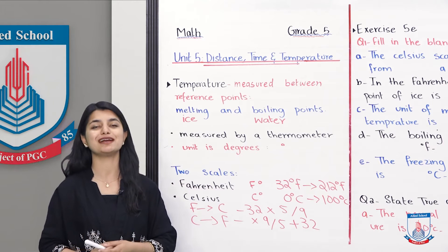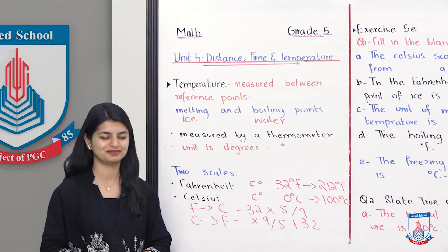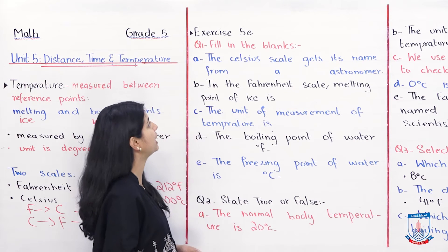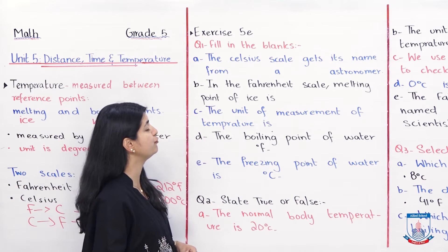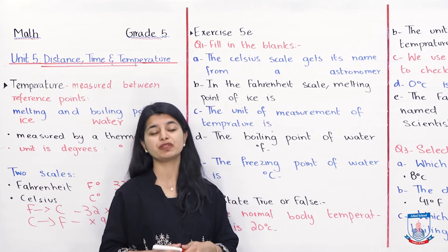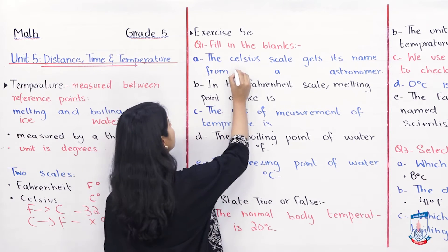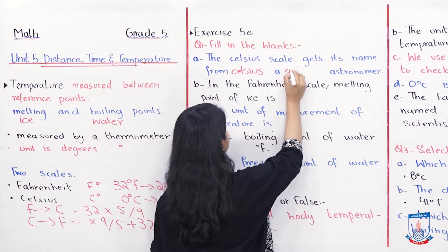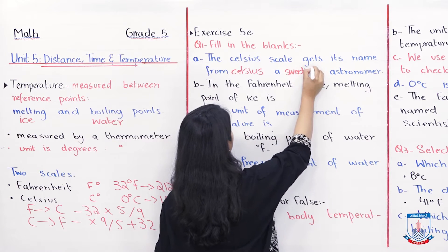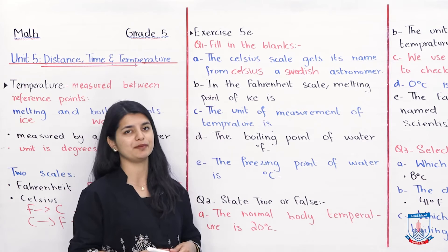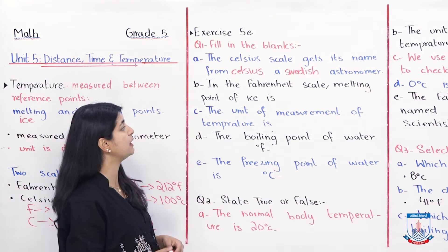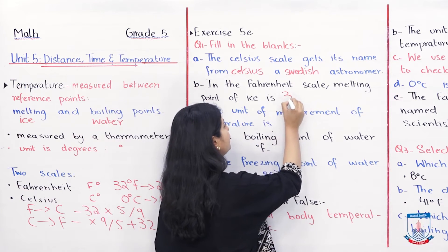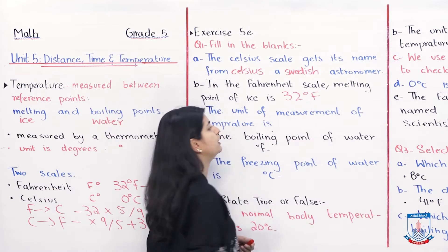Now let's go and practice in exercise 5E. Question number 1 is fill in the blanks. Part A: the Celsius scale gets its name from a Swedish astronomer named Celsius. Part B: in the Fahrenheit scale, the melting point of ice or freezing point of water is 32 degrees Fahrenheit.